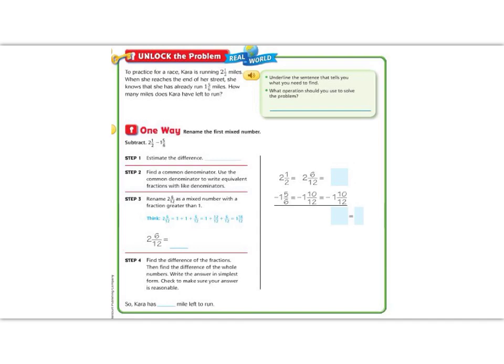Let's look in the green box to help us find some information. It says to underline the sentence that tells you what you need to find. We need to know this last sentence: how many miles does Kara have left to run? And what operation are we going to use? Well, I have a big number and a smaller number, and 'how many does she have left' tells me that I need to subtract.